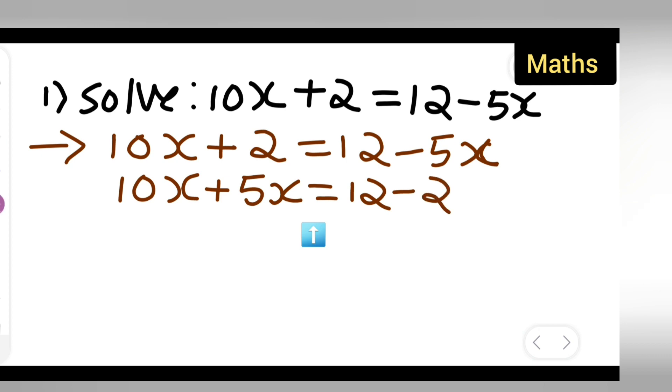Now let me explain this part. 10x I have written as it is. I have shifted this minus 5x to the other side. When it changes its side, the sign will also change. So minus 5x will turn into plus 5x. Is equal to 12 I have written as it is. This constant term I have taken to the other side, so it will become minus 2. Plus 2 will change into minus 2. So variable term and constant term I have separated them.